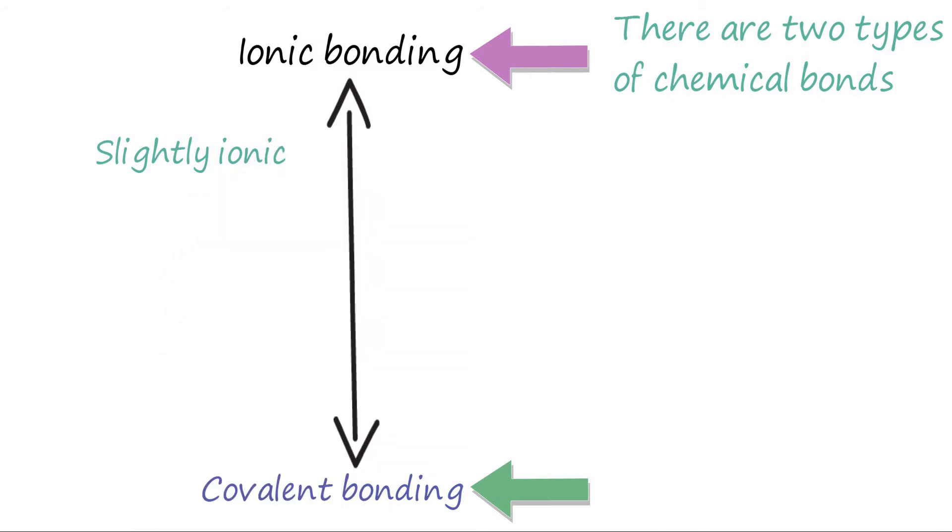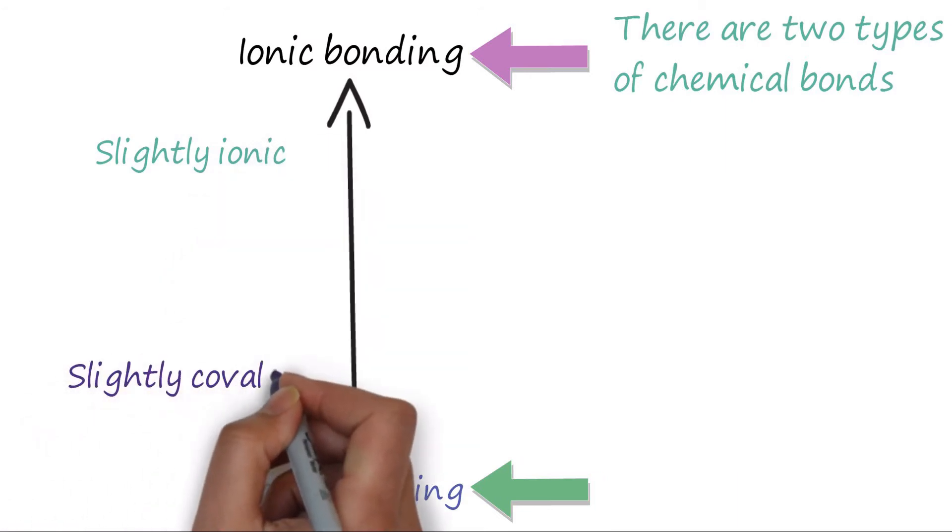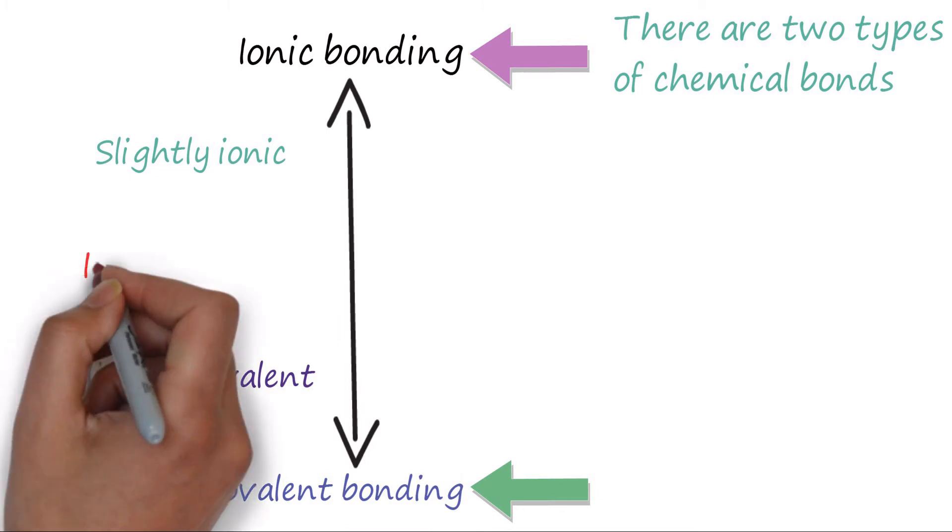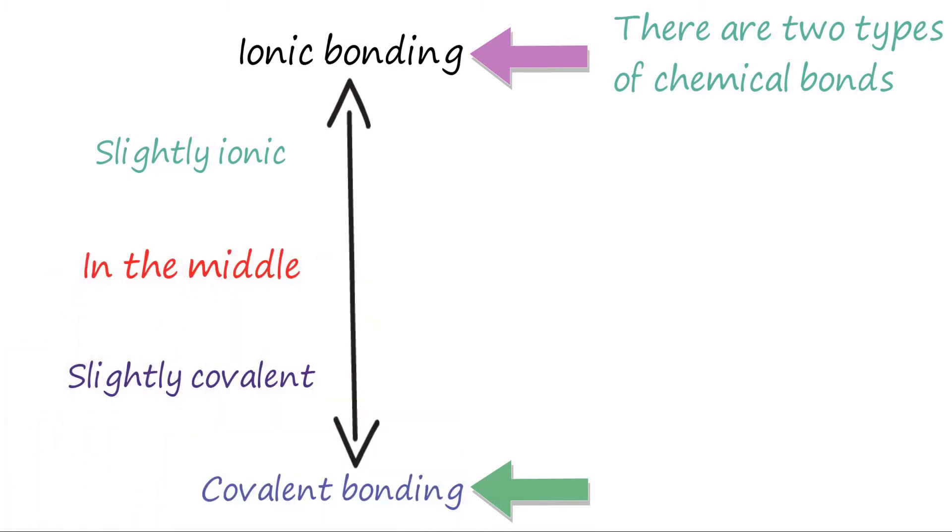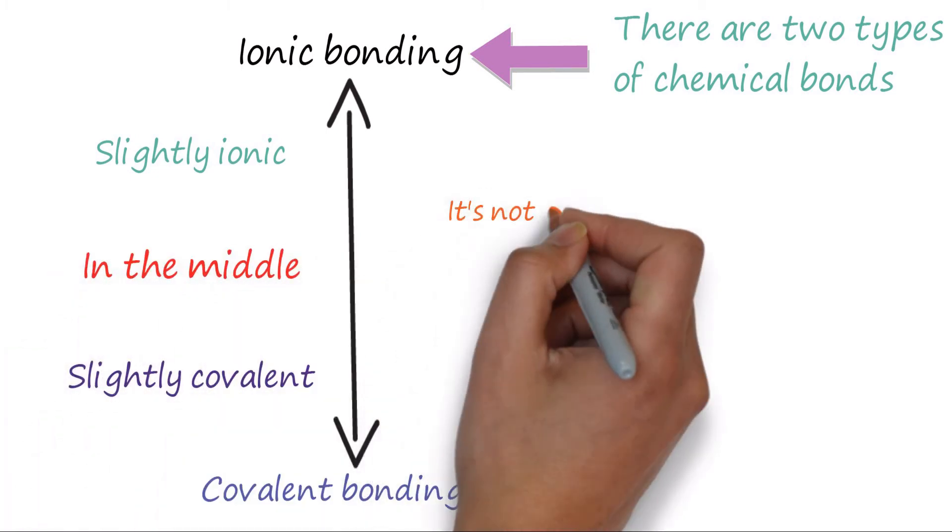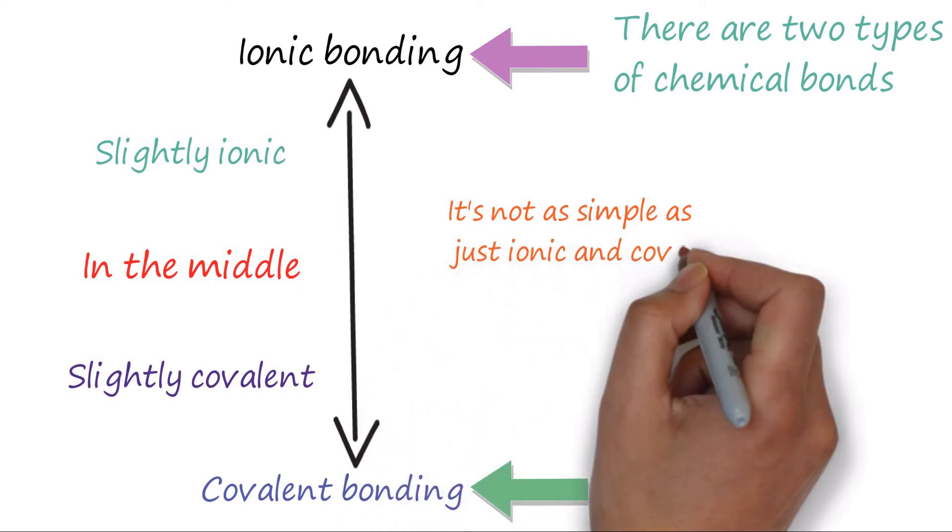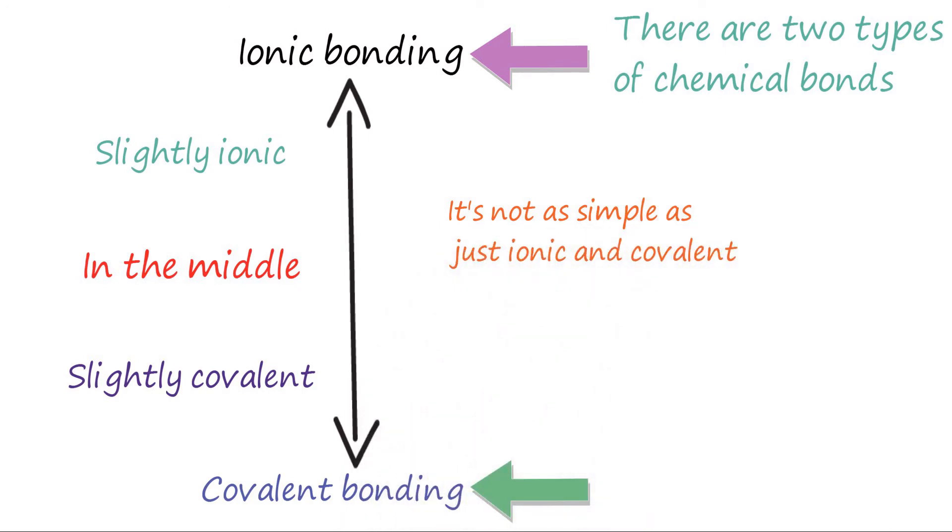If you look at this simply though, we can say the bond up here is slightly ionic, down here slightly covalent, and in the middle, well, they're in the middle. It doesn't matter what the spectrum means, but it does matter that there are far more chemical bond types than Mr. Chemistry has just told us.